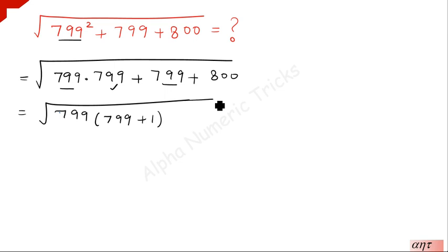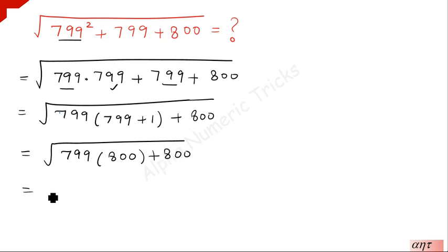Which equals √[799(799 + 1) + 800]. Since 799 + 1 is 800, this becomes √[799·800 + 800].